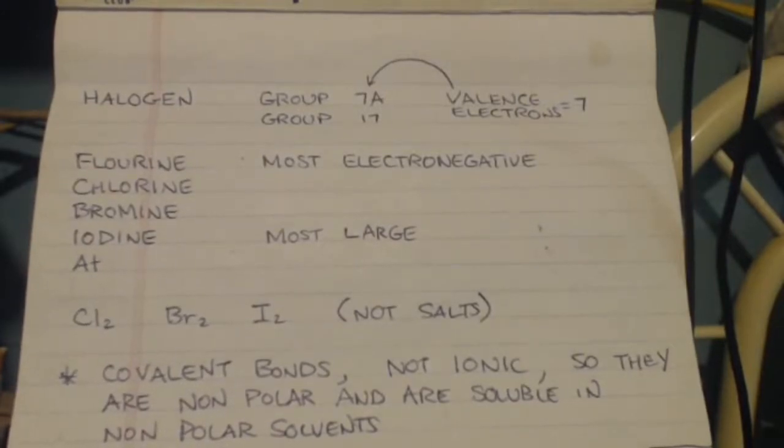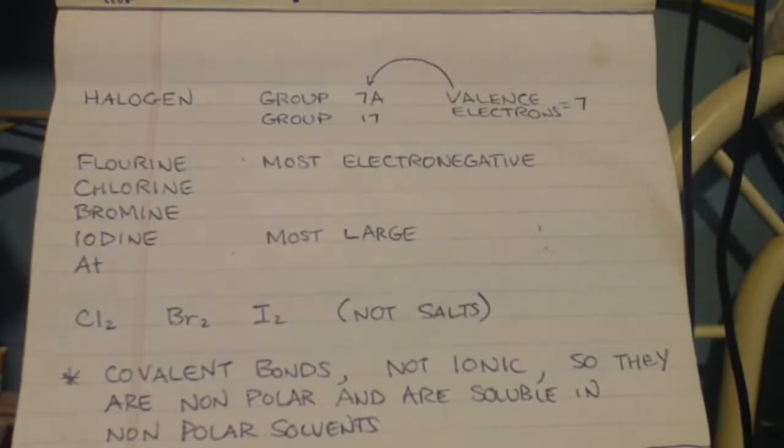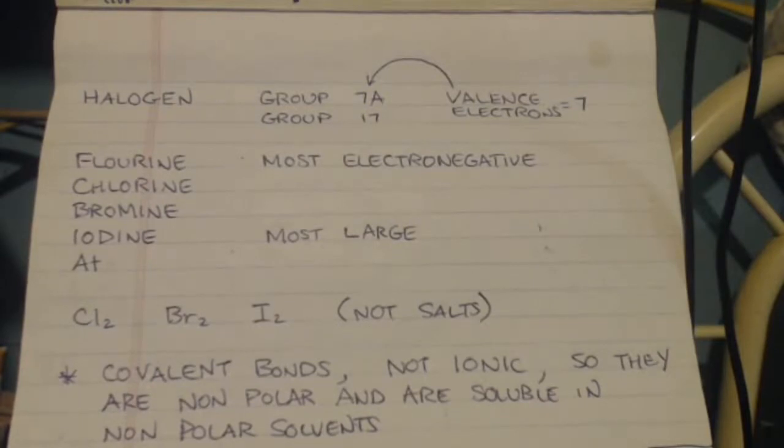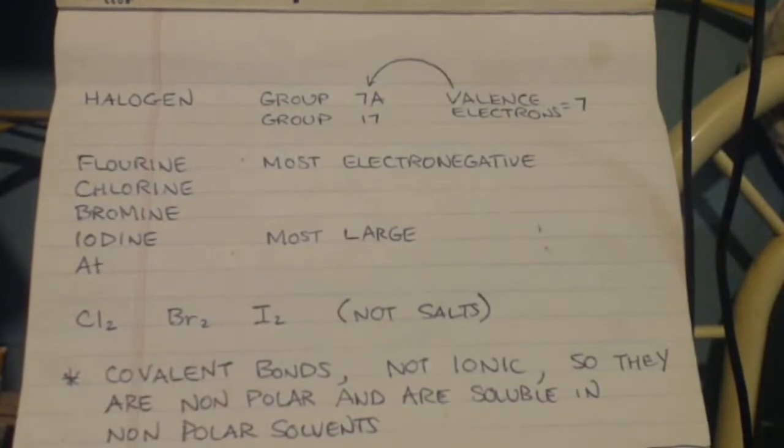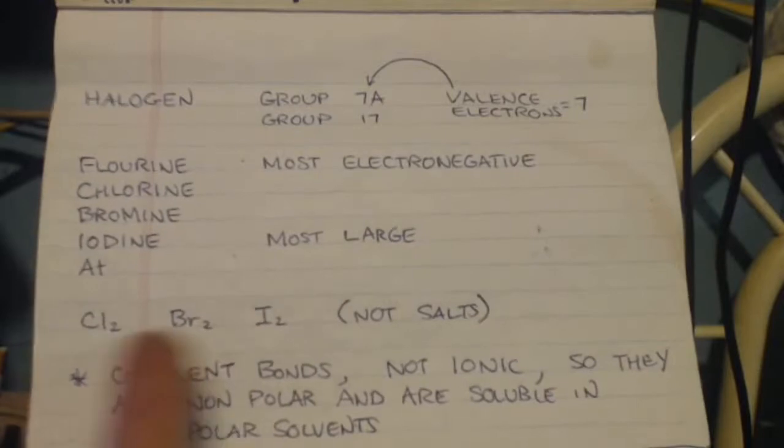So it's a covalent bond, not ionic. That's why they're soluble in non-polar solvents. Because of that fact, it's not really ionic. And that's why iodine is not that soluble in water and so forth, because these aren't salts.